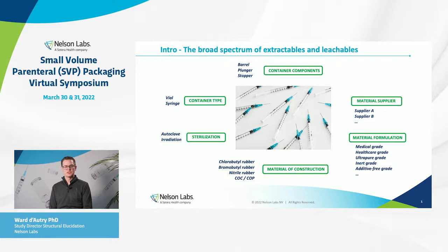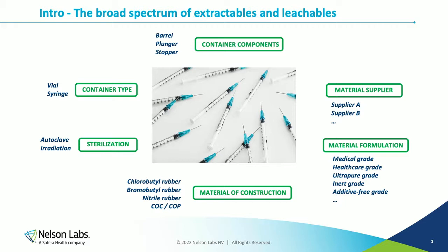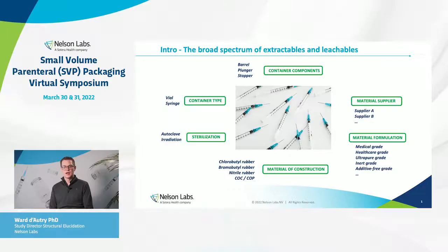Let me start by introducing the very broad spectrum of possible extractable and leachable compounds, and why there is such a broad spectrum. It starts with the application — here we are talking about small volume parenteral applications where we can have different types of container: a vial or a syringe, with different components such as a barrel, plunger, or stopper. For each component you can have different materials of construction, supplied by different suppliers using different formulations, and you can apply different methods of sterilization — leading to such a wide variety of possible extractable and leachable compounds.